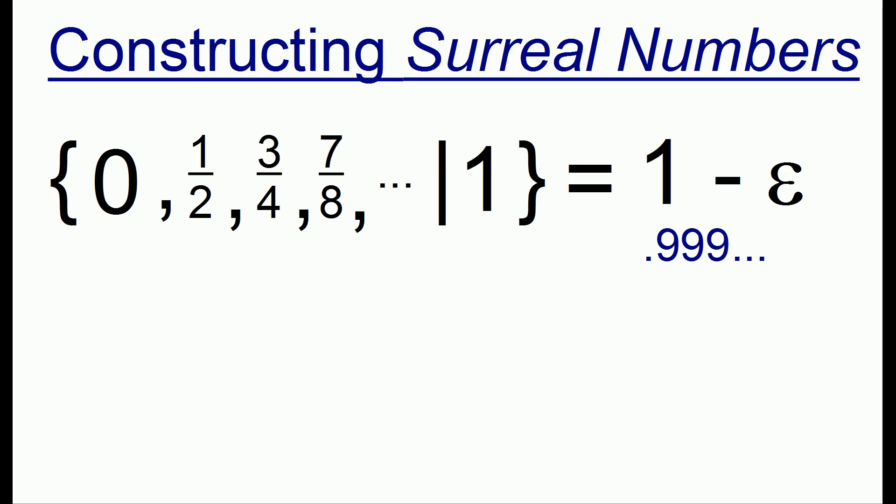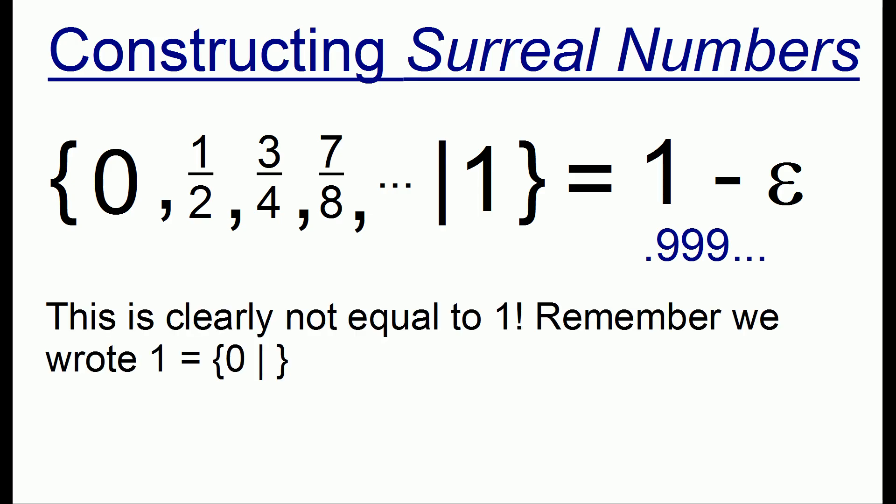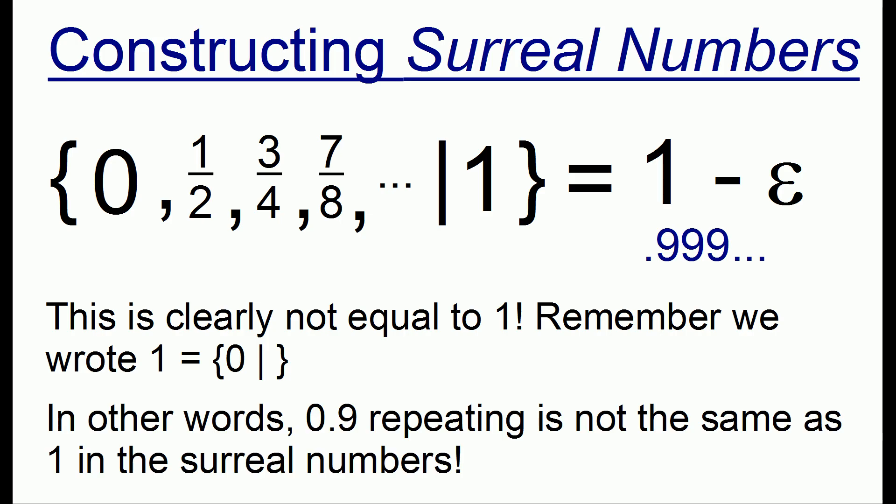So we've come up with a very weird number 0.9 repeating which is clearly not equal to 1 because 1 was equal to the set which just had 0 on the left side. So we've come up with a number system where 0.9 repeating is not the same as 1.